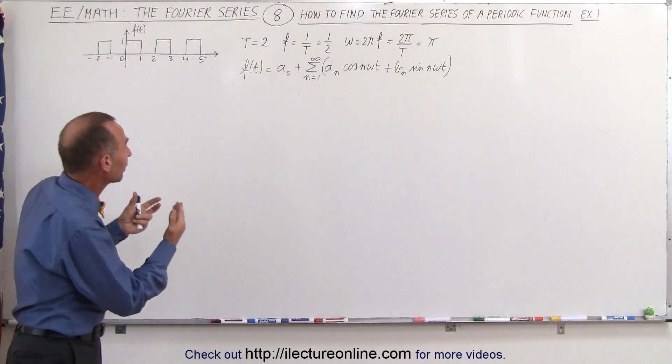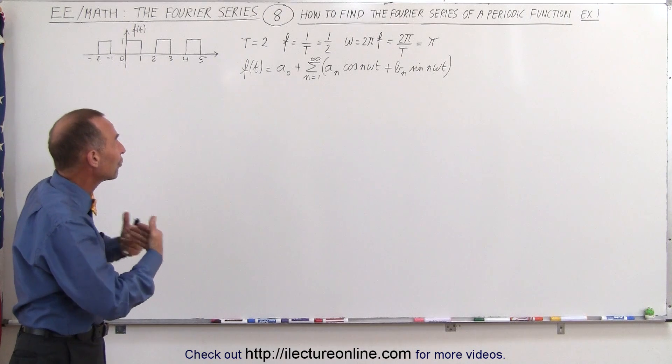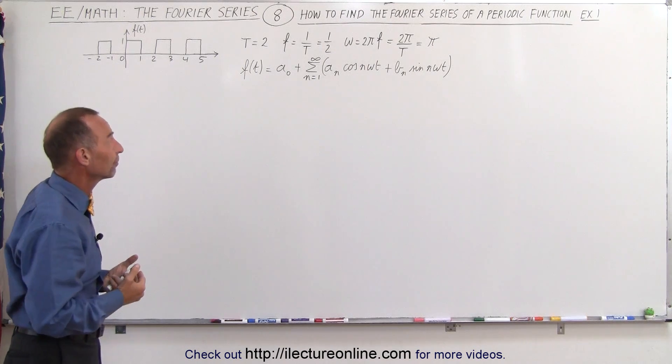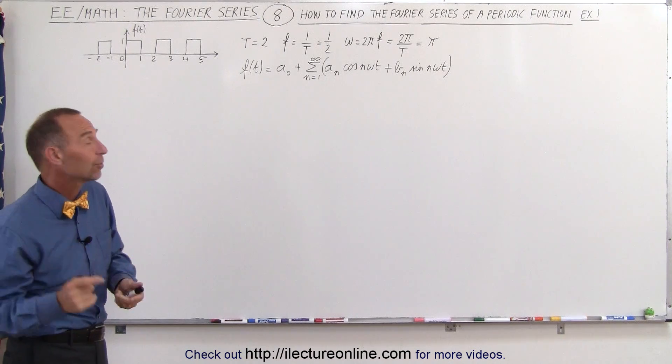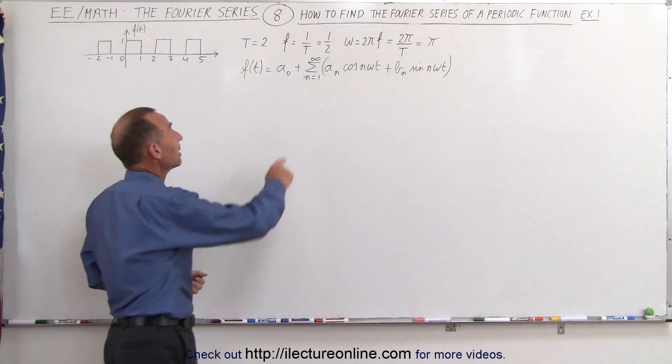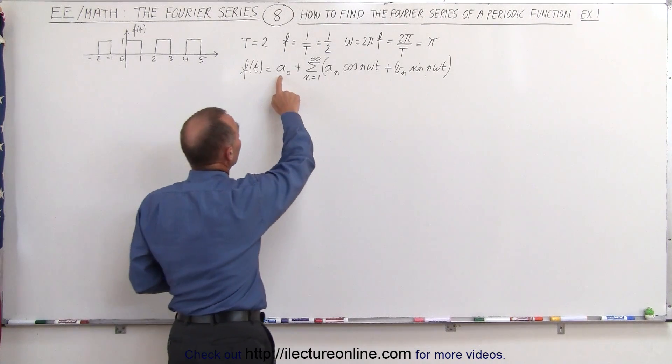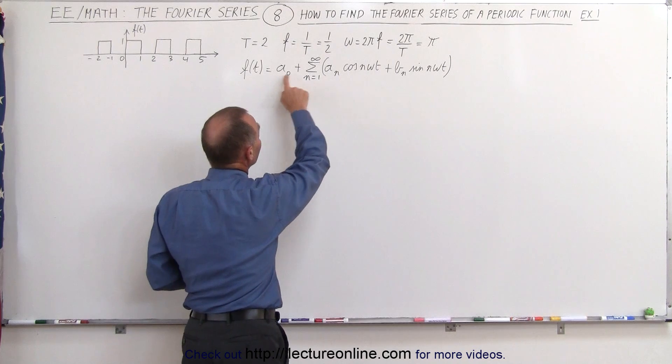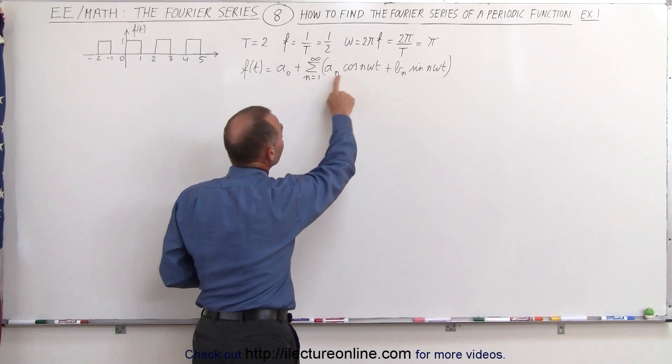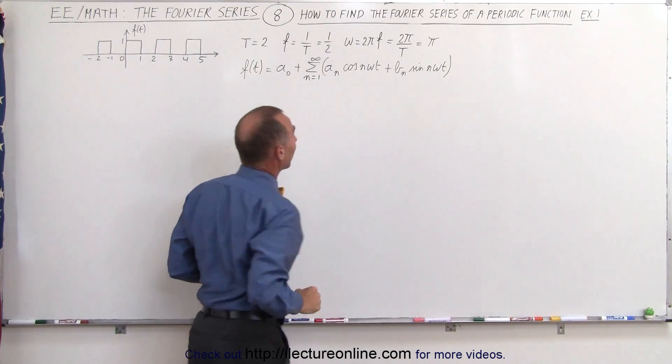How do we turn that into a Fourier series? Well, it comes down to finding the constants a sub 0, a sub n, and b sub n.